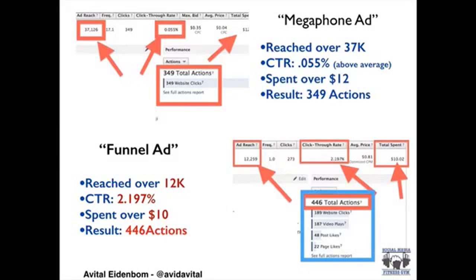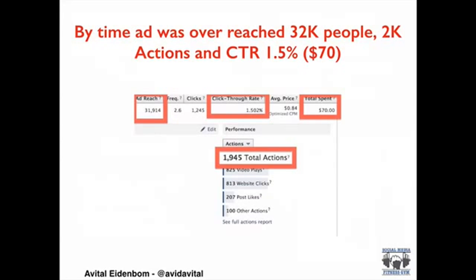That funnel ad saw a click-through rate of over 2%, and we spent just over $10 — resulting in almost 450 actions. That's nearly 100 more actions than the previous ad, which reached three times as many people. By the time the ad was over, it reached 32,000 people with a click-through rate of 1.5% and created almost 2,000 total actions — including video plays, website clicks, and post likes. By using Facebook Insights and Facebook Graph Search, you can create ads that perform better and reach the right audience.